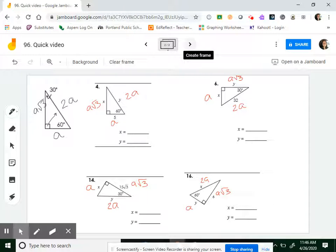So in number 4, they're giving me what A equals. A equals 5. So all I have to do is plug in. Y is 2 times 5, which is 10. And X, plug in A is 5. 5 times root 3, you can't do anything to that, so 5 root 3.